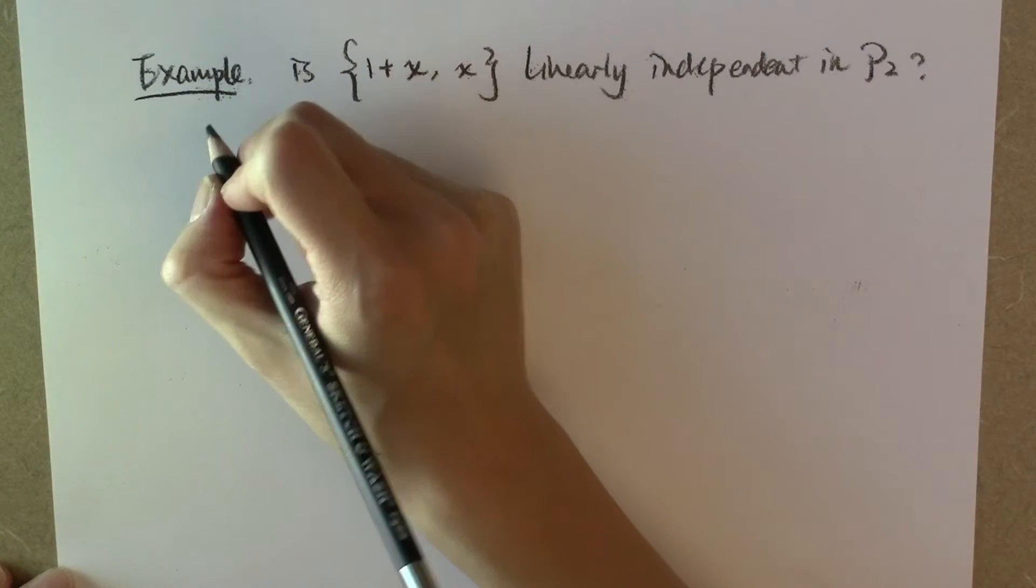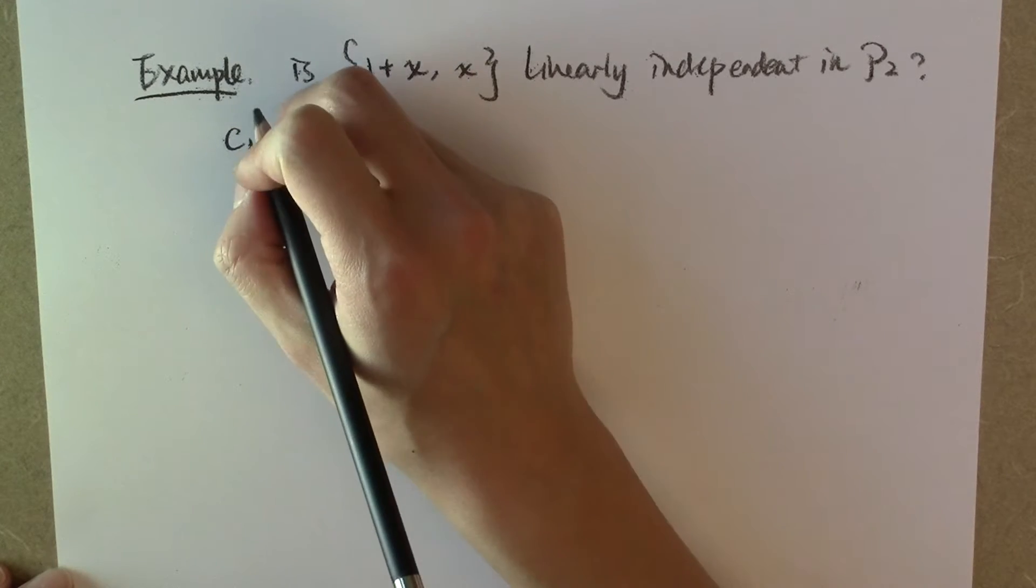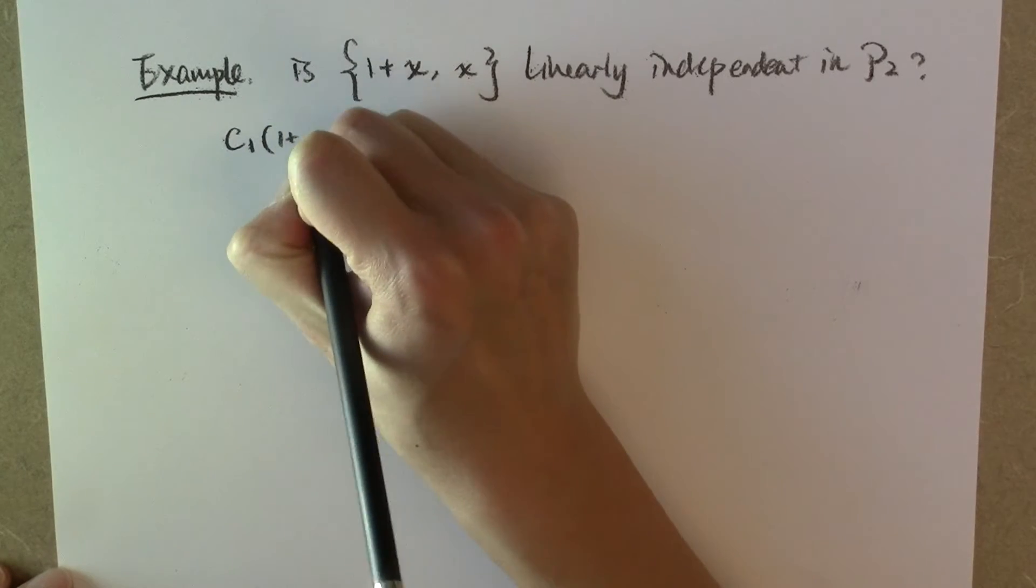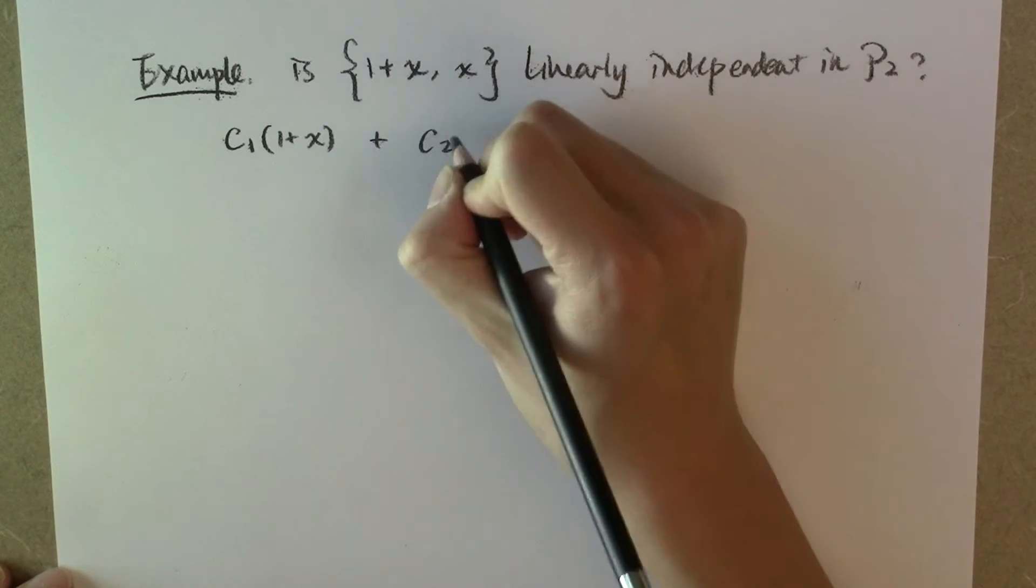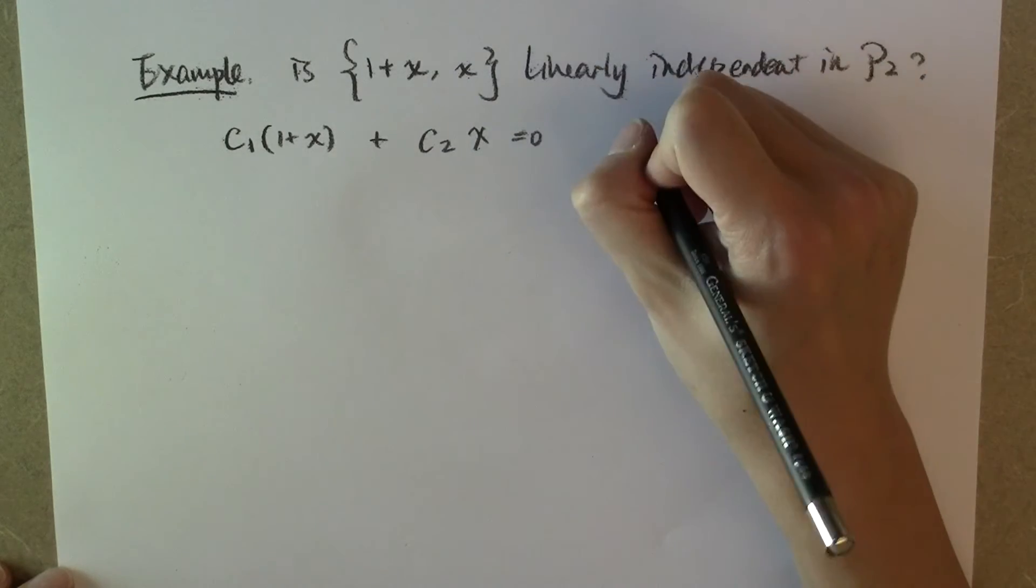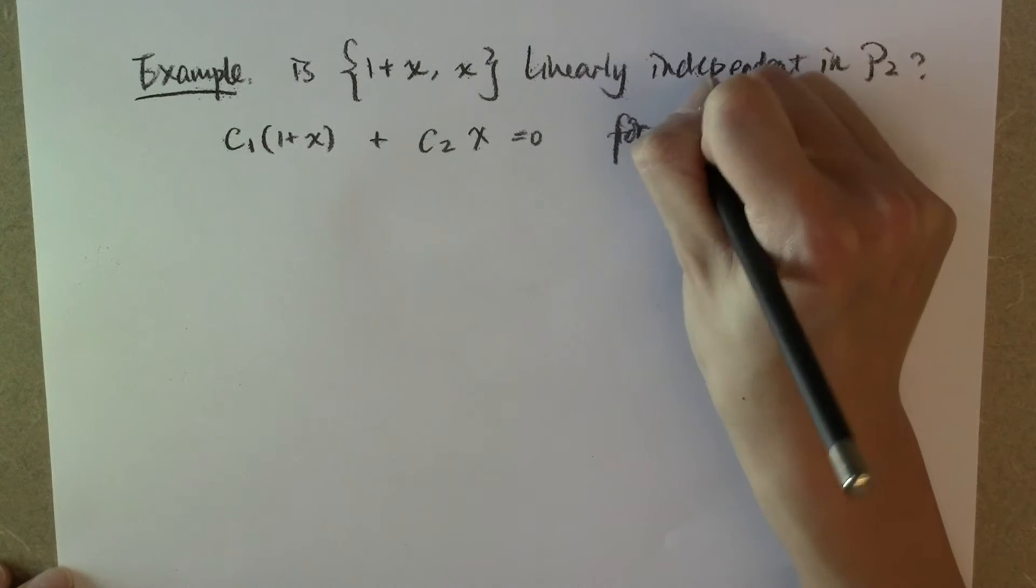Let's put the linear dependence relation to test. Let's see if there exists c sub 1 and c sub 2 so that c sub 1 multiplying the first vector 1 plus x plus c sub 2 multiplying the second vector is equal to the zero vector, which means this has to be zero for all x.